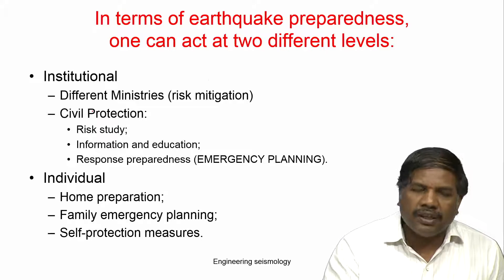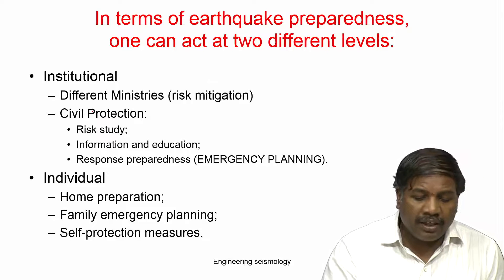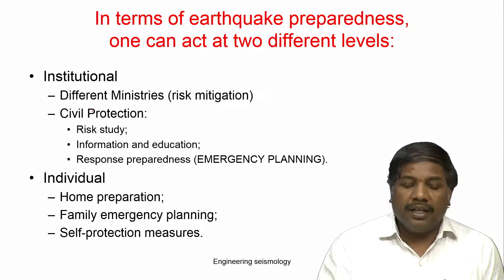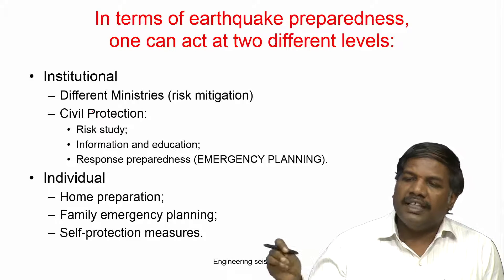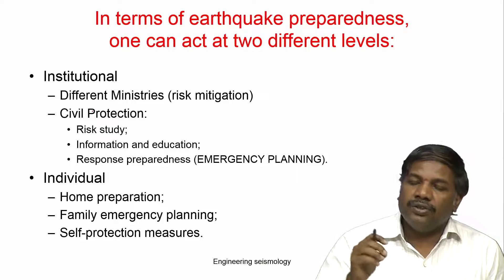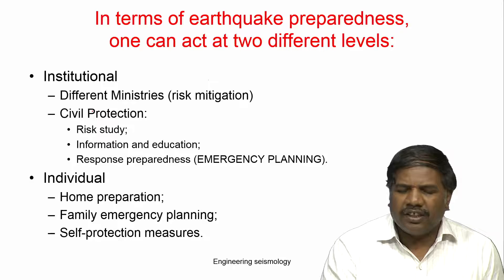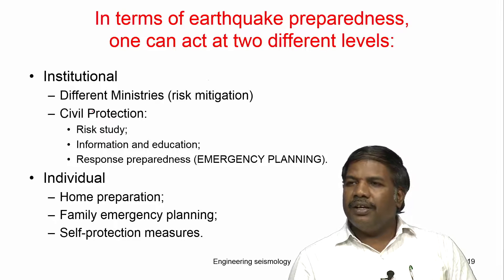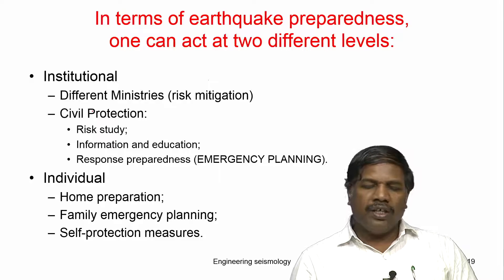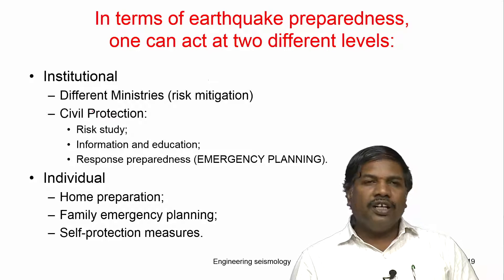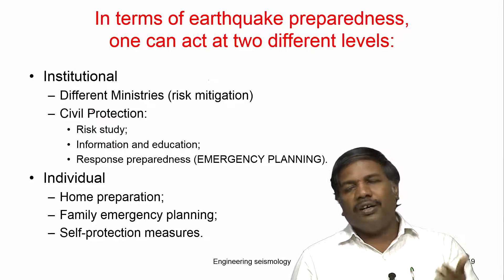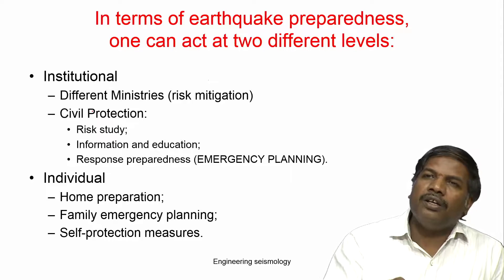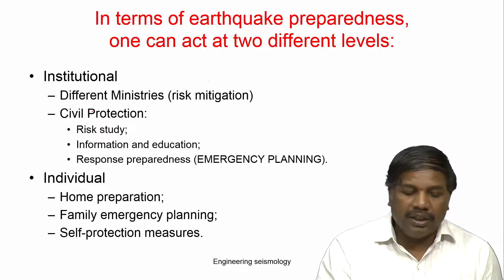At the individual level, each person living in a particular area should have home preparedness. Everyone should know what earthquake means, what to do when one occurs, and have a family emergency plan — where to go and where to hide. Self-protection measures are also important, similar to airplane safety instructions: first protect yourself by taking the oxygen mask, then protect others. When an earthquake occurs, know what you should do first and then guide others.